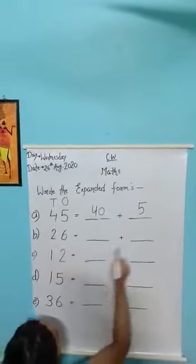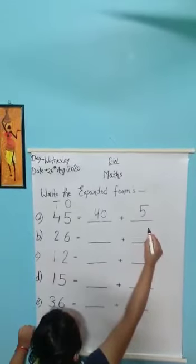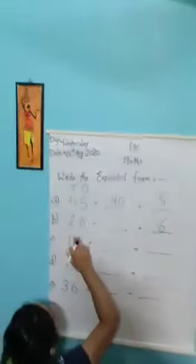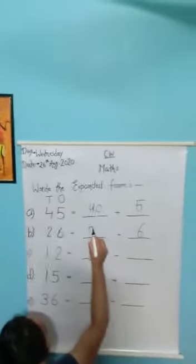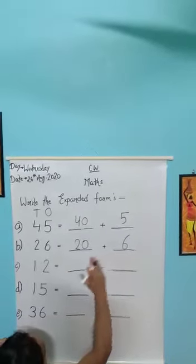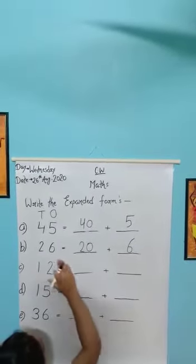Tens pe hai, twenty-six. Pehle hai, six ki value batayenge. Six ki value ones hai, so yahan pe, six write karenge. Two ki value tens hai, so yahan pe, twenty write karenge. Twenty plus six. Kya hoga beta? Twenty-six.